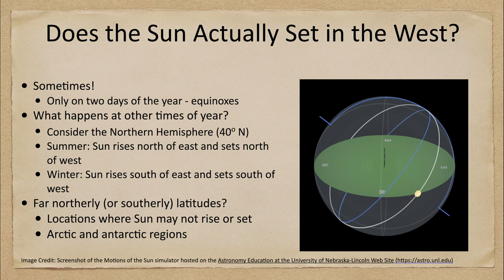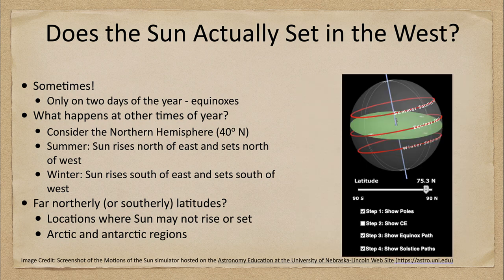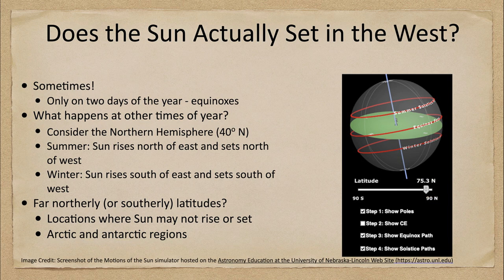Well, we end up with locations where the Sun may not rise or set at all, and we call these the Arctic and Antarctic regions. Here's an example from a latitude of 73.5 degrees north. The paths of the Sun are shown here, and on the summer solstice the Sun's path is up here — it is above the horizon. The Sun reaches its highest point, then its lowest point, but even its lowest point does not dip below the horizon.